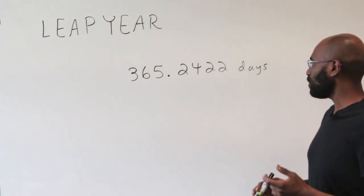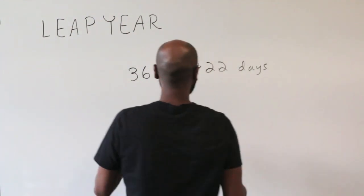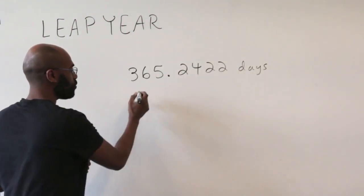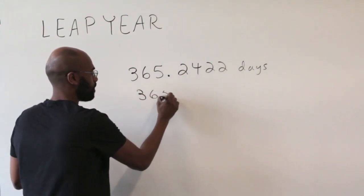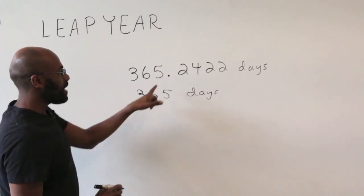So to really understand what's going on here, what I want to do is peel this number of days off into pieces. So we have the 365 days, which we know and love, and then we have a little bit extra.